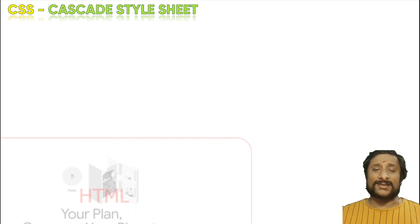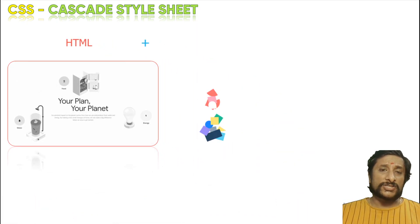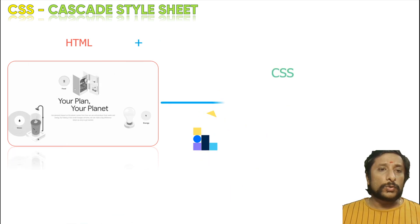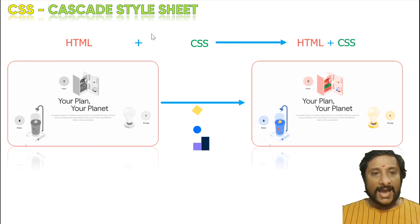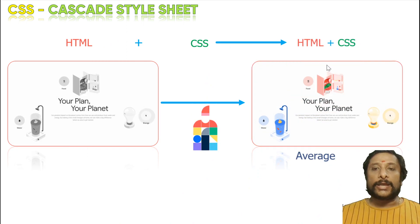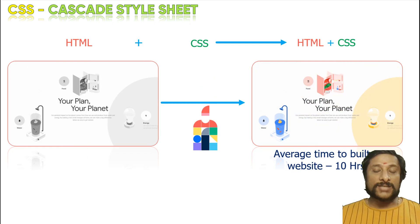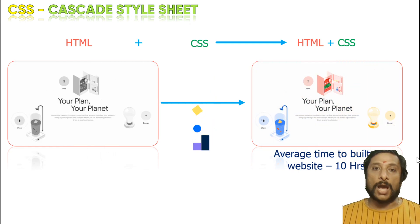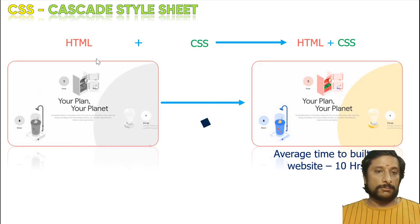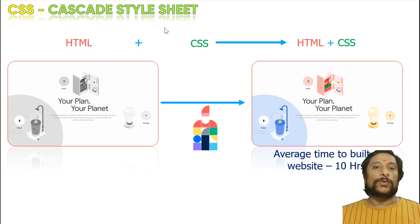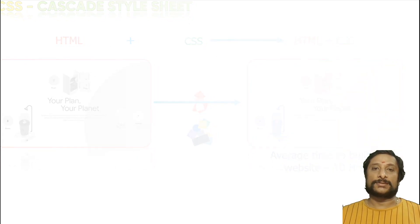What is Cascade Style Sheet? CSS is nothing but, using HTML, you are able to design a form — with the coloring it becomes an HTML and CSS file. If you talk about how much time it will take, it will take at least 10 hours to build a website with colorings. So, HTML with basic content and coloring became an HTML and CSS website.